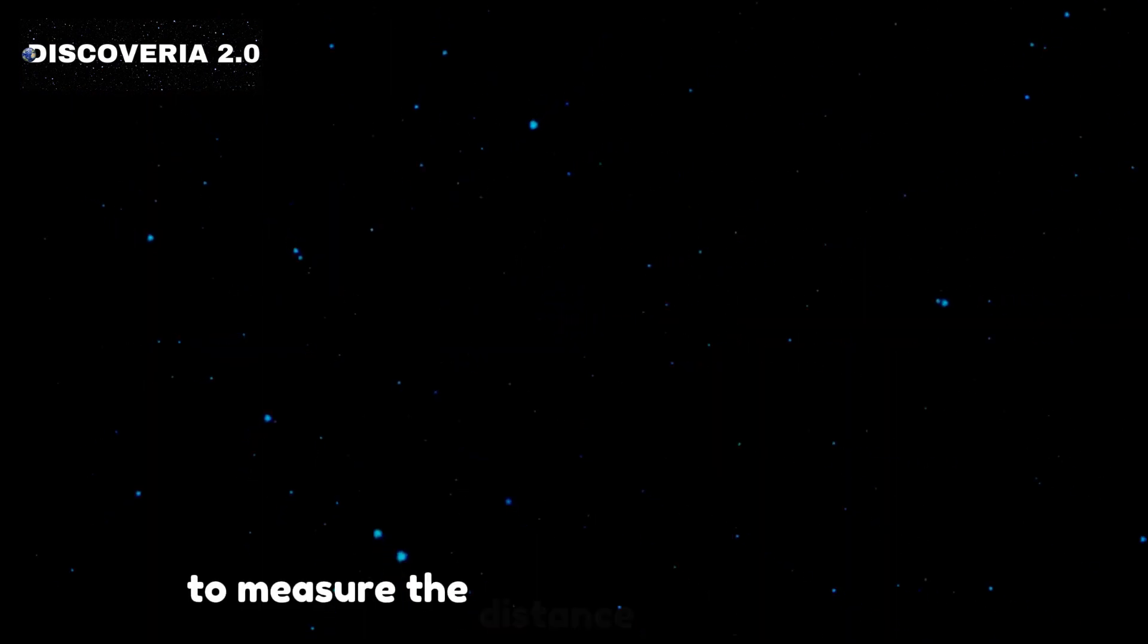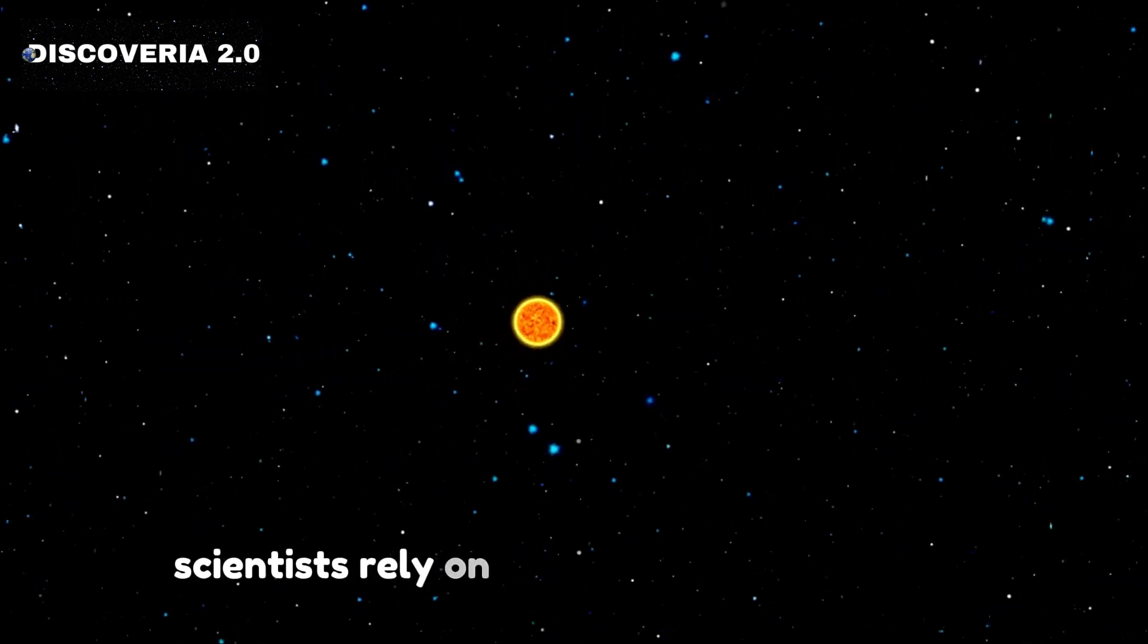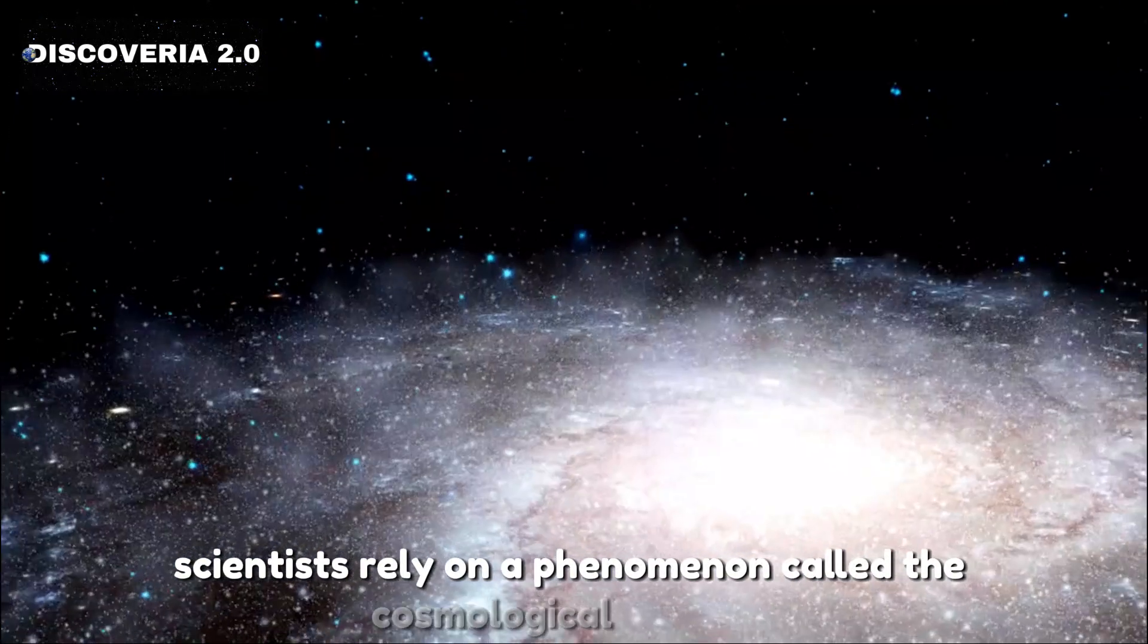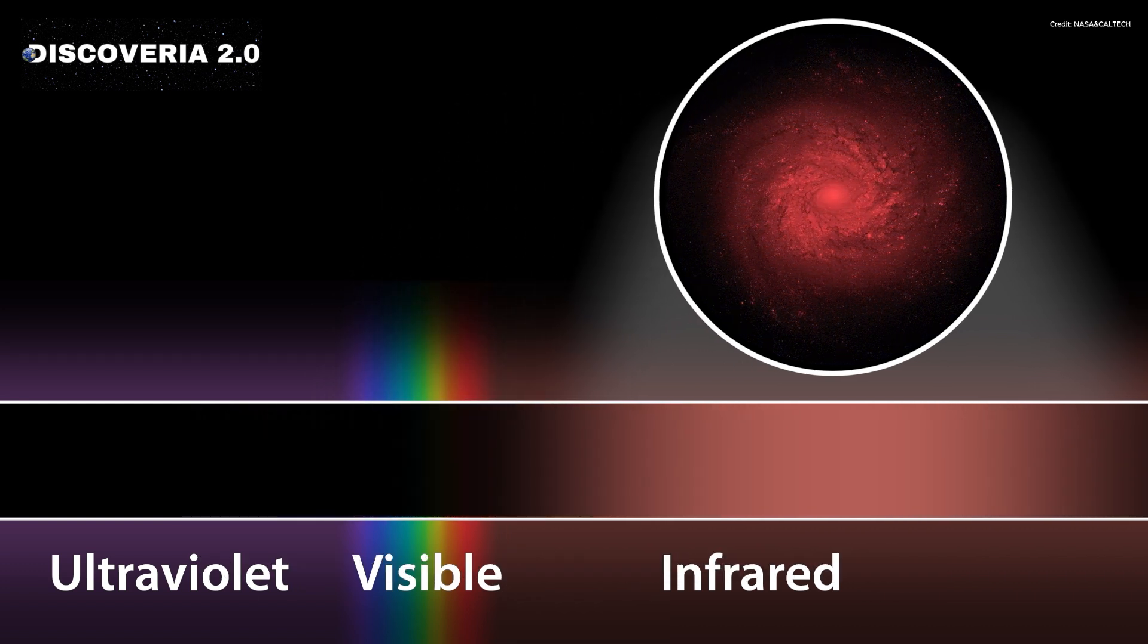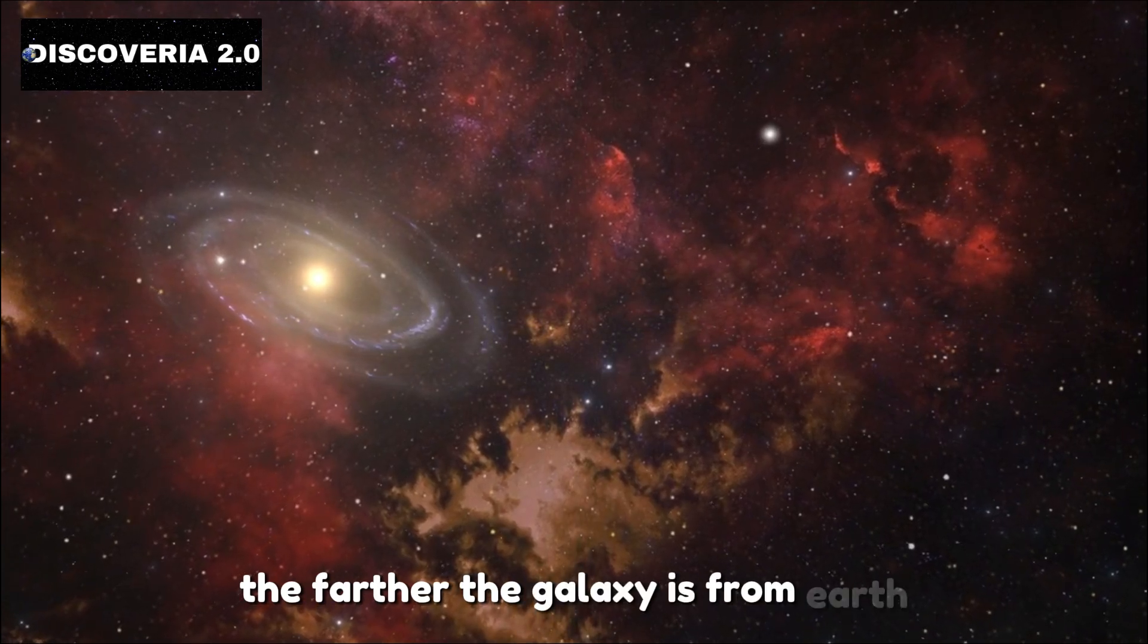To measure the distance of these galaxies, scientists rely on a phenomenon called the cosmological redshift. In simple terms, the greater the redshift observed, the farther the galaxy is from Earth.